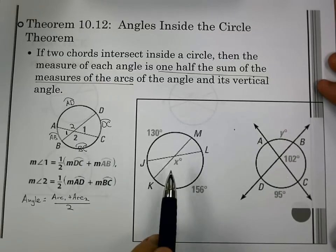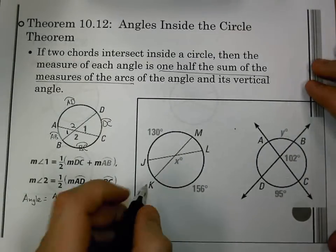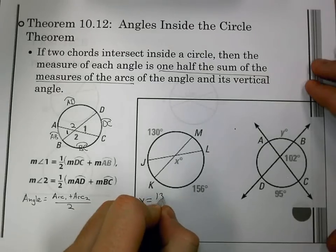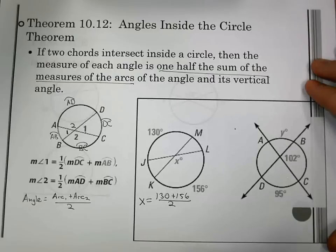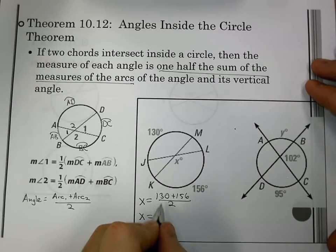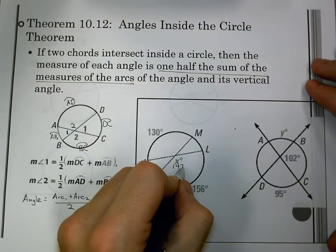So let's jump over to our examples. I have X. X is my angle. That's equal to 130 plus 156 divided by 2. X equals, then, 286 divided by 2 or 143. So that is this angle right here.